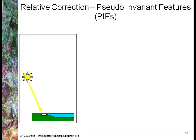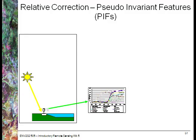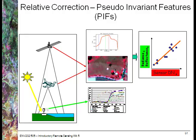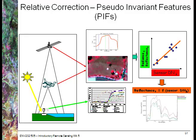Another approach is to use pseudo invariant features (PIFs) — features in an image where you know what the spectral profile should be and it shouldn't change over time. You can measure these with a field spectrometer before the image is taken, then compare the field spectrometer data to the image data for each band and derive a correction equation to correct the image based on that field spectrometer data.